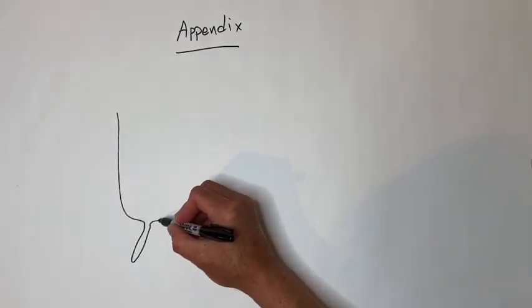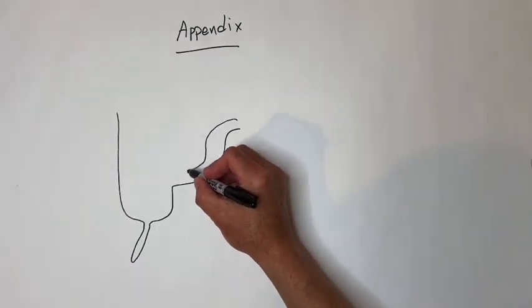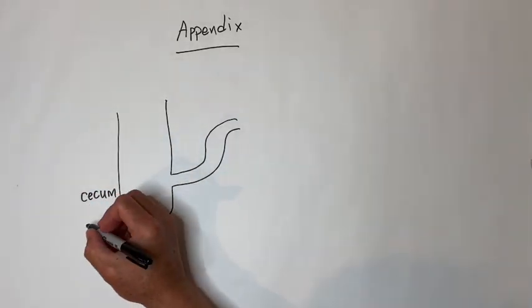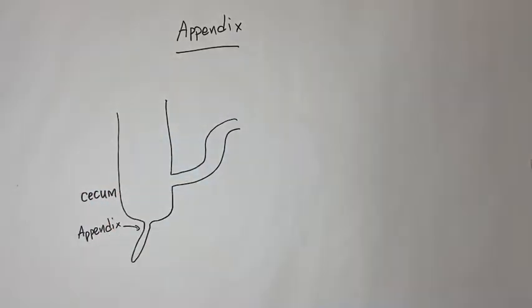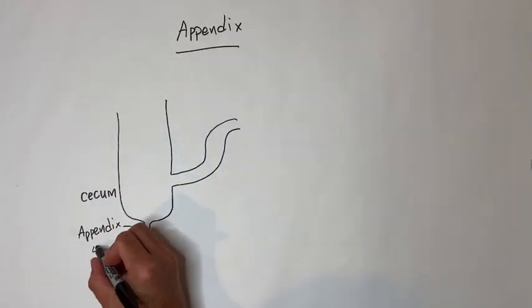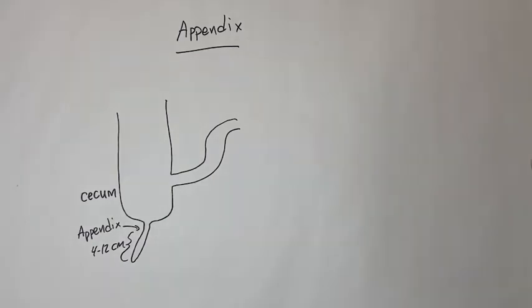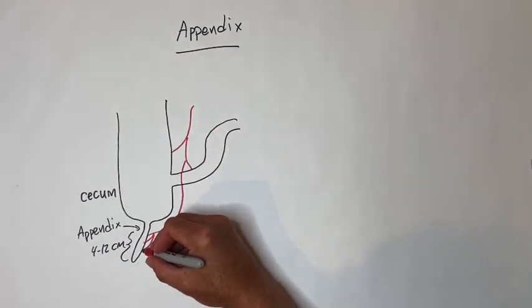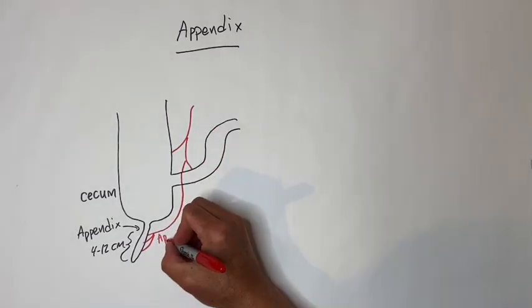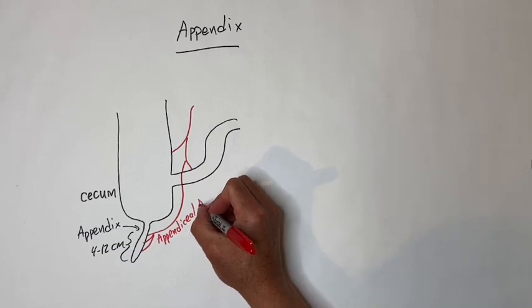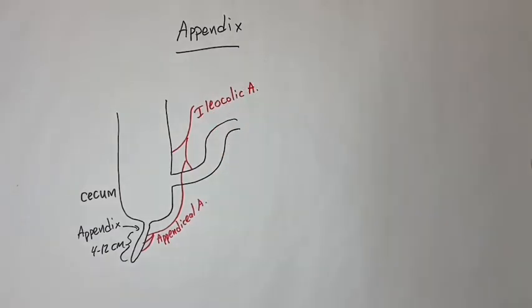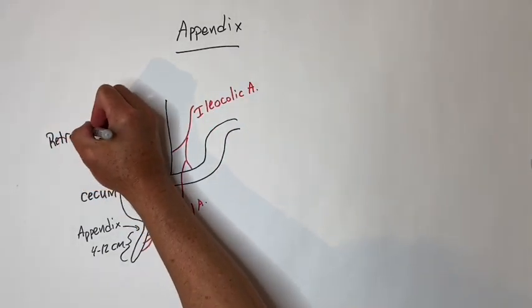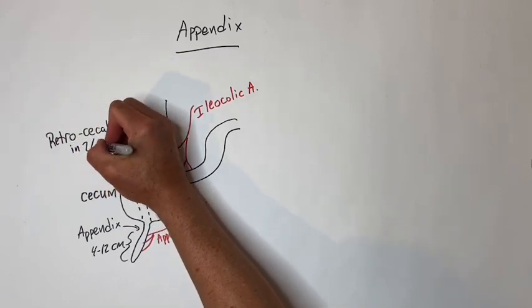This is a review for appendix and cecum. Let's start with anatomy. The appendix is located at the inferior cecum and is about 4 to 12 centimeters long. The arterial supply is the appendiceal artery, which is a branch of the ileocolic artery. The appendix can be located in a retrocecal position in about two-thirds of people.